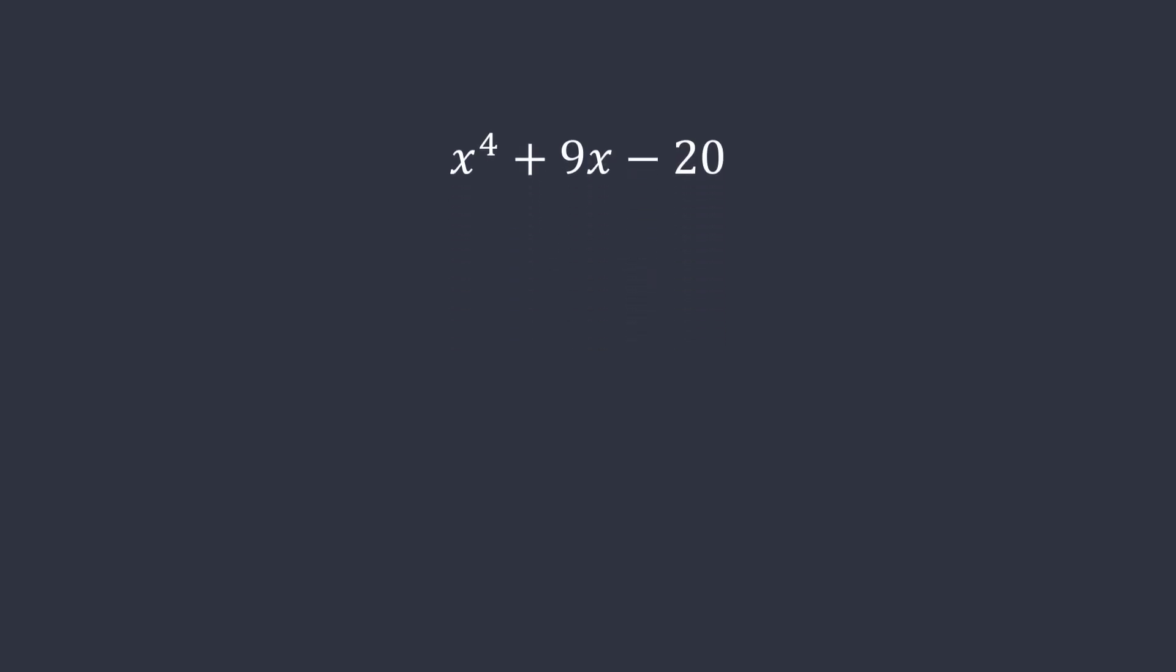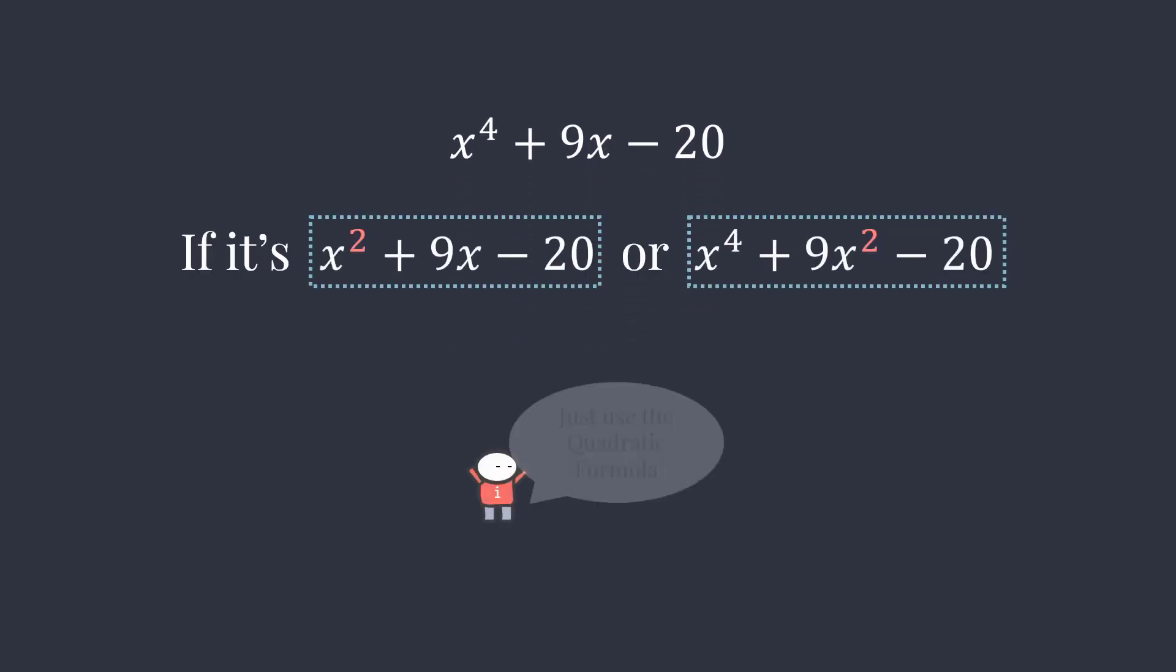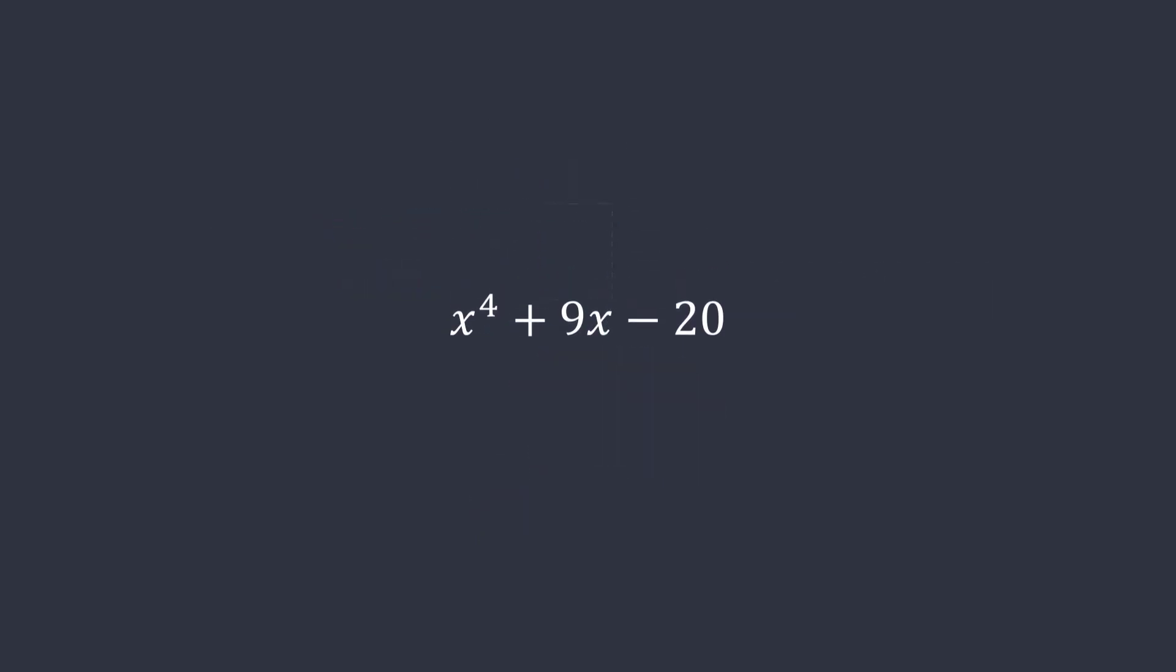How do we factor this? If this polynomial is in quadratic form, then it's easy. But we have x to the fourth and a linear term 9x. What should we do? Pause the video if you want to try first.